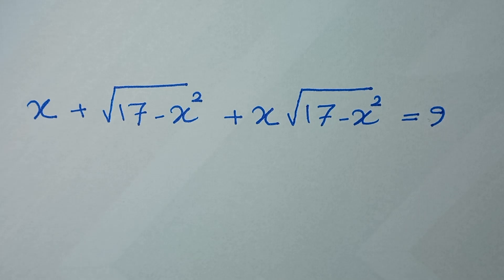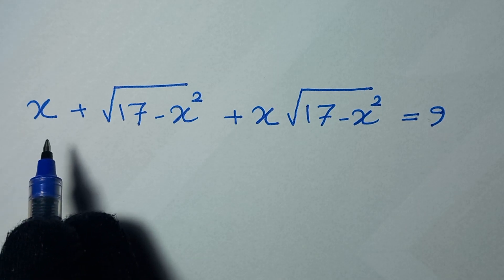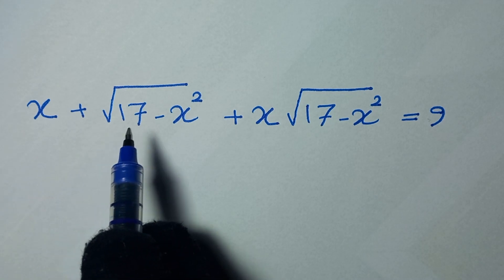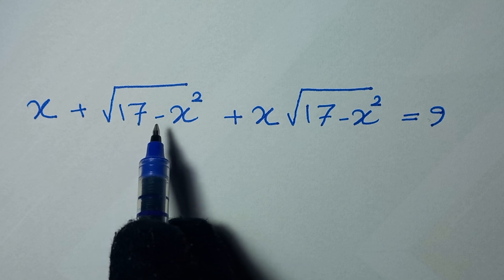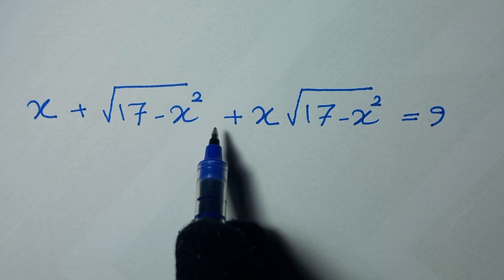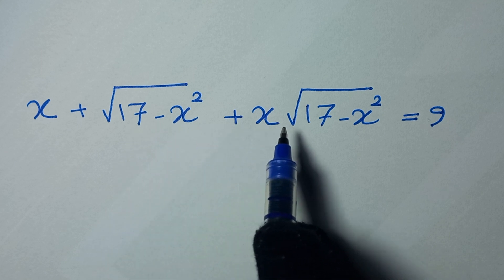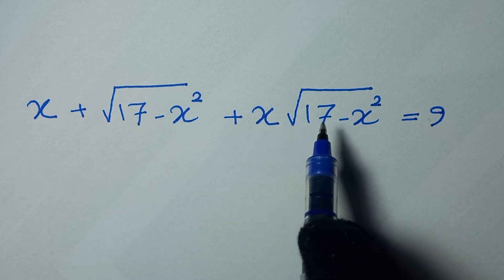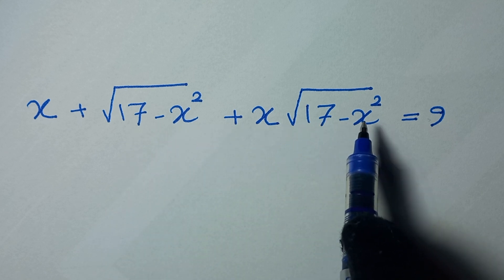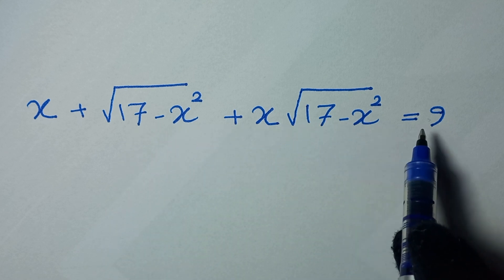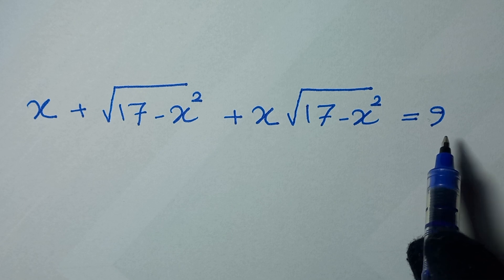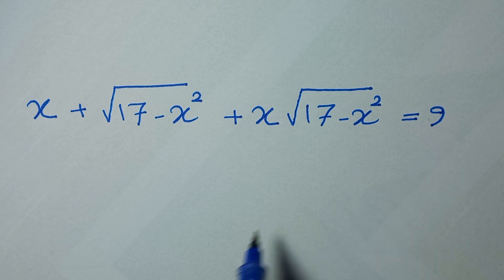Hello my friends, you're welcome to solve this math problem which is x plus square root of 17 minus x squared plus x times square root of 17 minus x squared is equal to 9, to find the values of x.